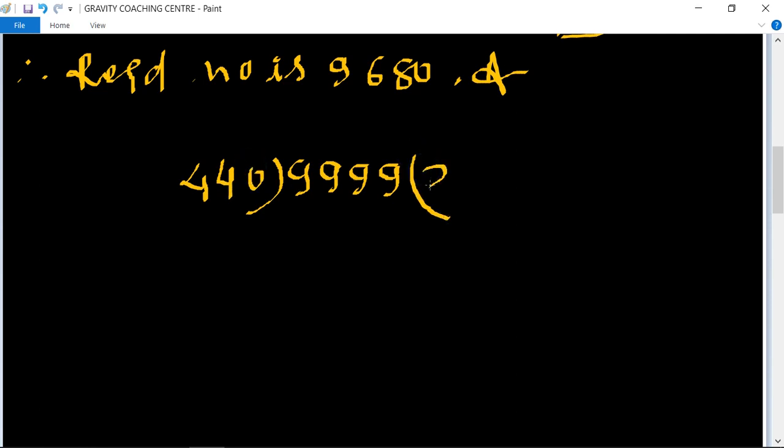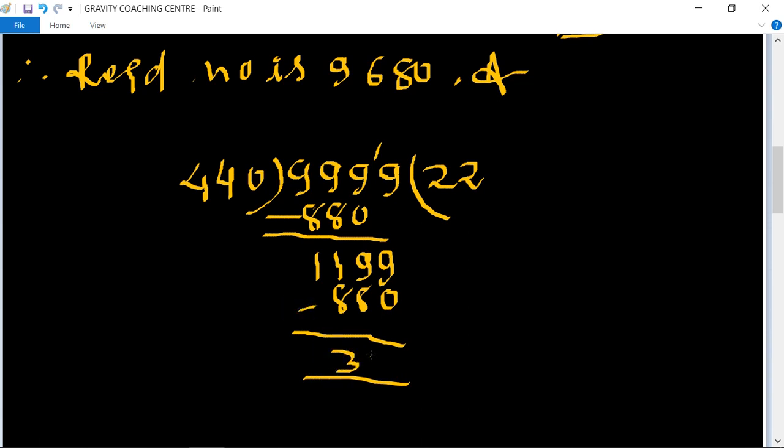So 9999 divided by 440. First table of 2, double 8 is 880, minus equals 1199. And again table of 2, double 880 minus 1122. So the remainder is 319.